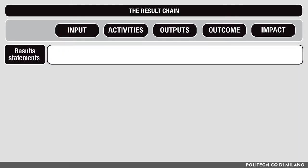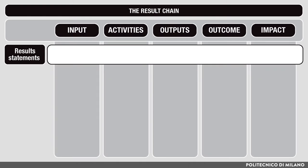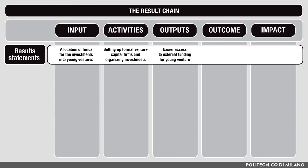First, we shall define result statements for each step. We can define inputs as the financial resources allocated for the investment into young ventures. We can describe activities in terms of setting up a governmental venture capital firm which selects the most promising startups to be funded and eventually invested in them. We can express outputs of the program as startups receiving the funding. Then we can define outcomes as startups focusing more on innovative activities, and finally, we can define impact as the creation of more innovative startups.